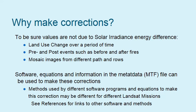Why make these corrections? Solar irradiance energy differs by date, so if you're looking at land use changes over time using imagery from different dates, you want to correct that data so you're comparing reflectance values and not differences in solar energy. The same applies to pre- and post-event imagery, such as before and after fires or natural or man-made disasters. Also, most projects require mosaicking more than one image together — collecting data from different paths and rows on different dates — and you want to ensure values are consistent. Software, equations, and metadata file information can be used, though different programs have their own protocols.